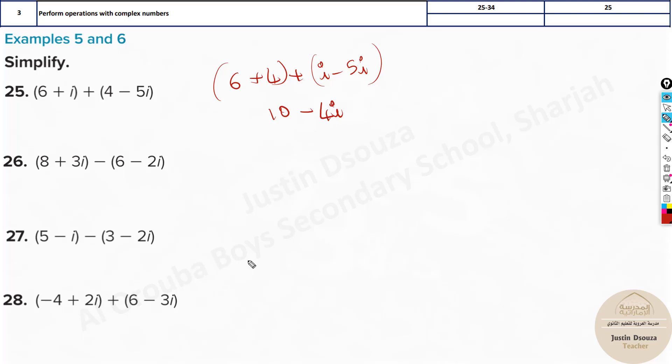Let's take one more problem. What about this one? Minus 4 plus 6, and you will have plus 2i minus 3i. Solve it up. It will be 2 minus i. That's it.